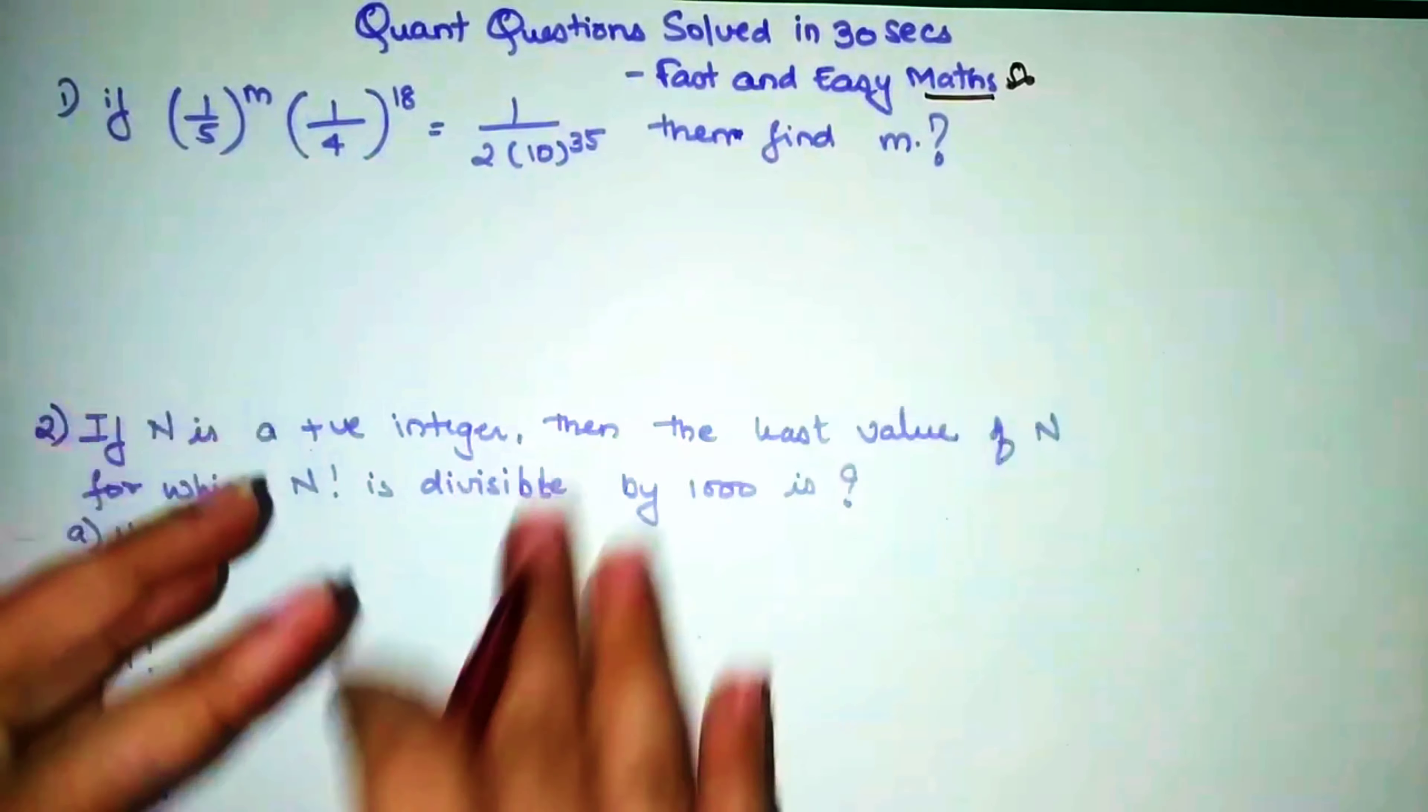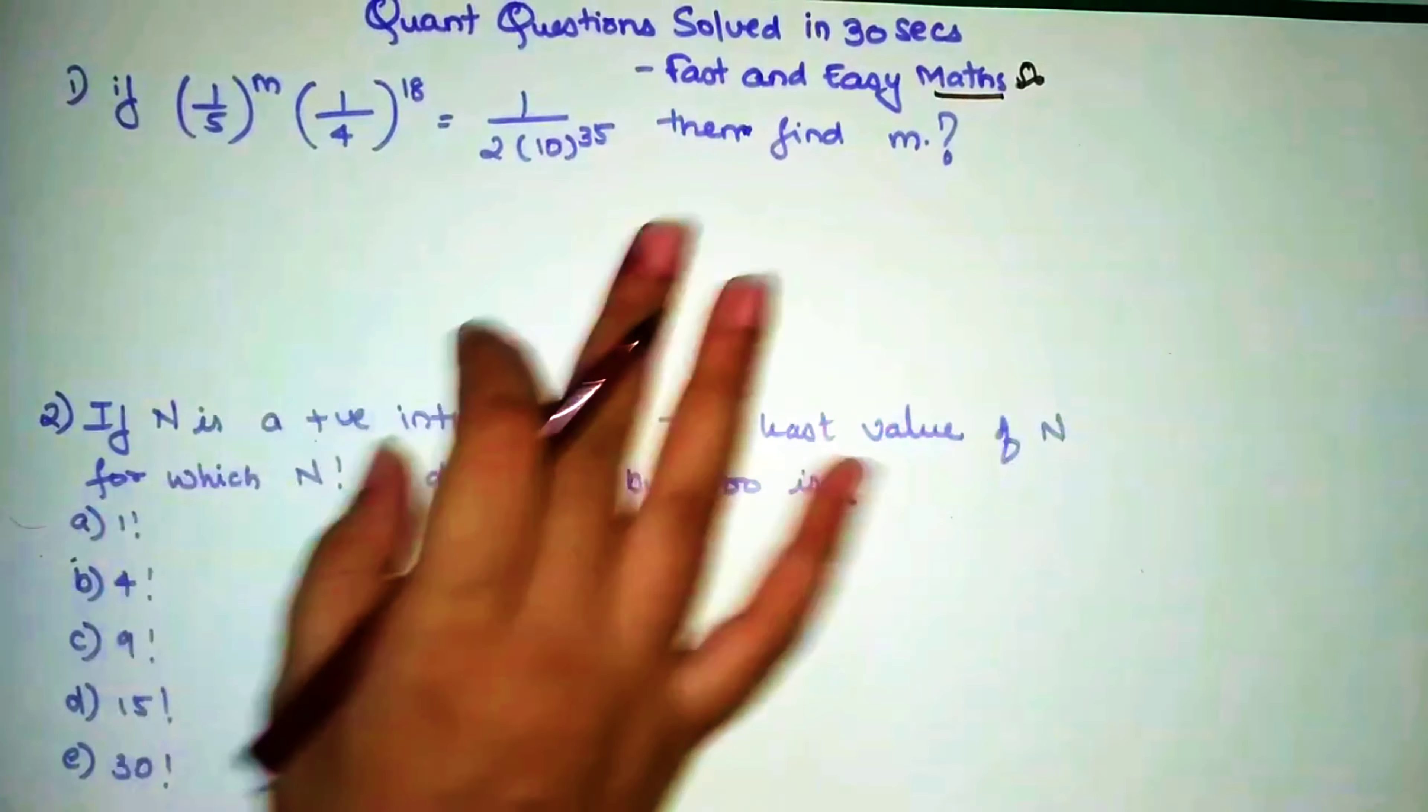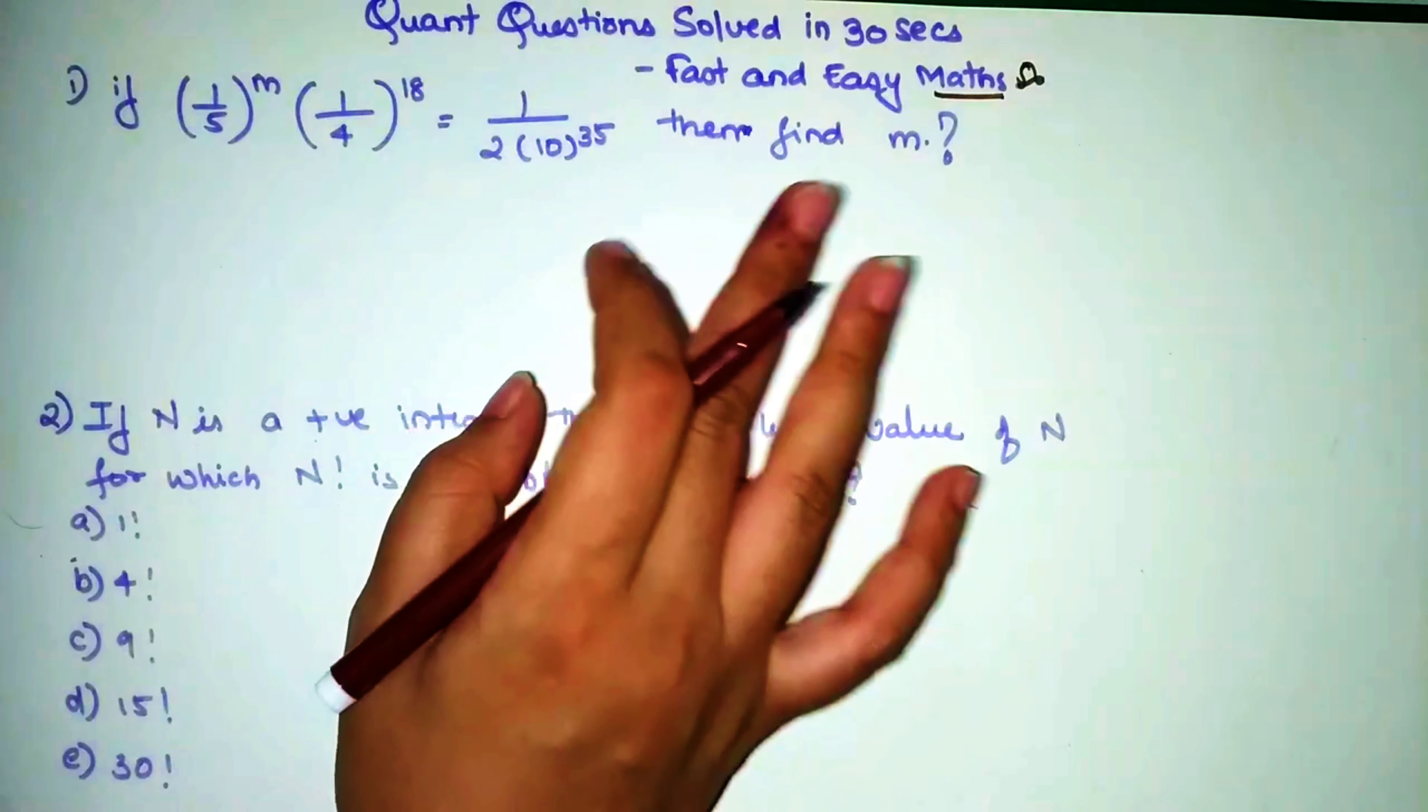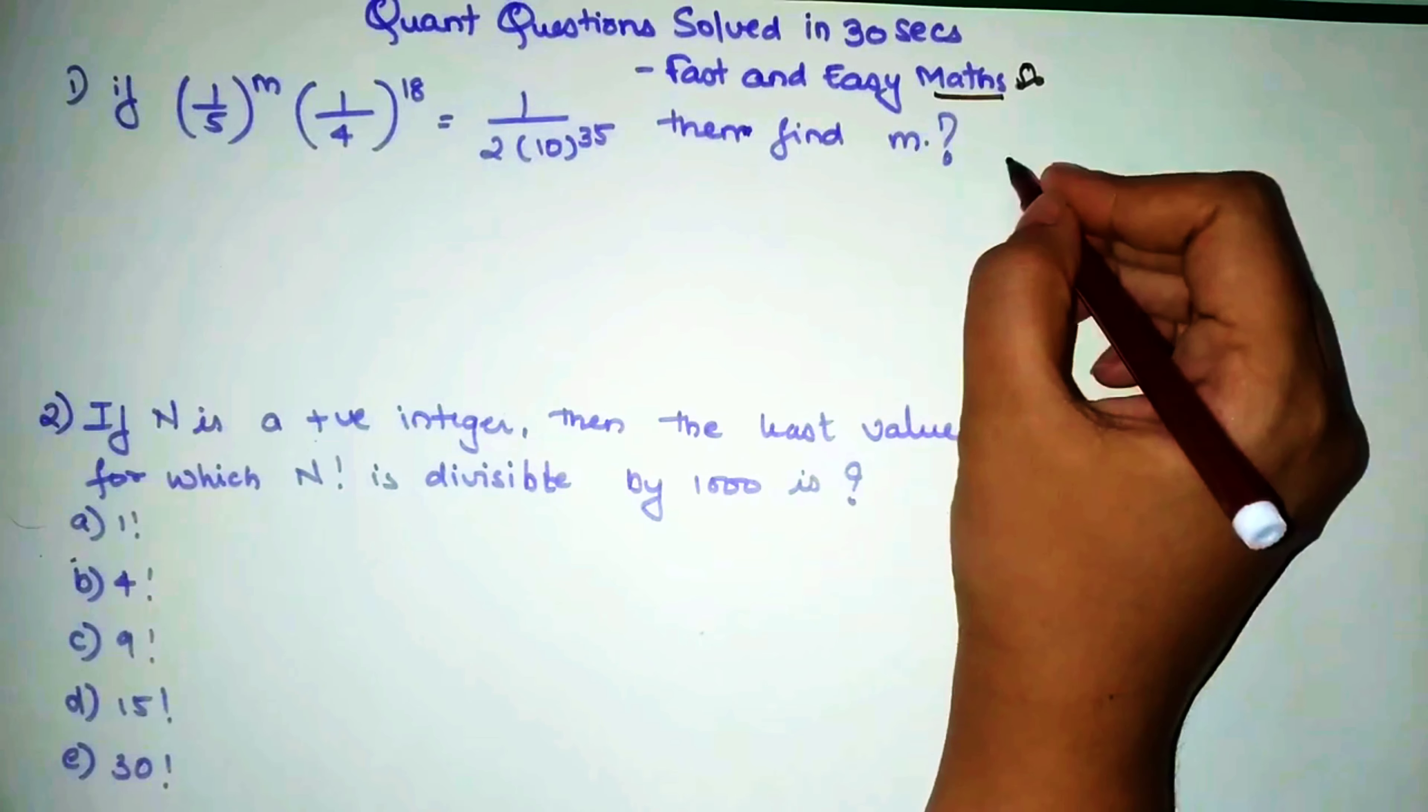Okay, so let's talk about the first question. The first question is if 1/5 raised to m times 1/4 raised to 18 equals 1/2 raised to (2×10) raised to 35. Before beginning with this term, I would like to talk about this particular concept.